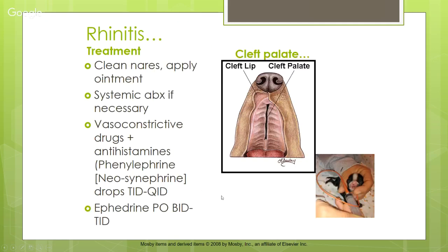Treatment for rhinitis involves cleaning out the nares and applying ointment to the outside. We may need systemic antibiotics, vasoconstrictive drugs, and antihistamines to relieve congestion. Phenylephrine, pseudoephedrine, or Neo-Synephrine drops up the nose — animals don't really like it but it helps clear the nasal passages. Ephedrine is another vasoconstrictive drug we can use.